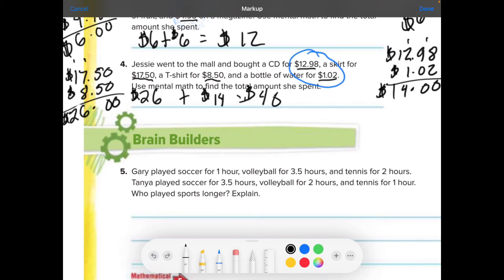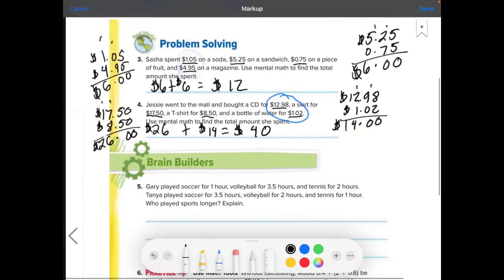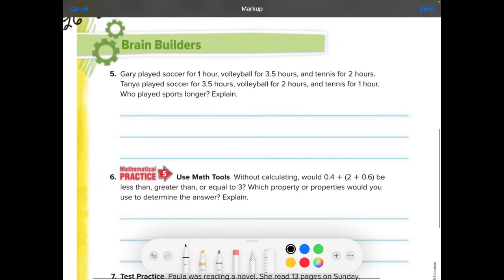Brain builder. You ready? Gary played soccer for one hour, volleyball for three and a half, tennis for two. Those are all Garys. Tanya played soccer for three and a half hours, volleyball for two, and tennis for one. Who played sports longer? Explain.